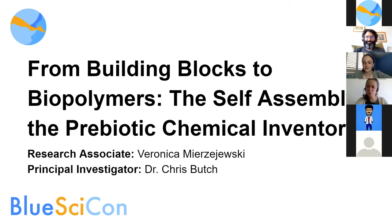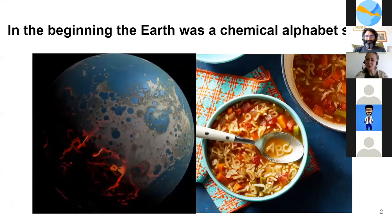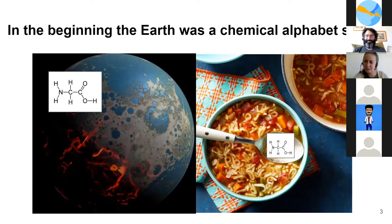A useful way to contextualize this paradigm is to think of the early earth as this chemical alphabet soup. So before life, you had these small molecules that were these letters in the soup, diffusing around randomly with no organization, and they had a lot of freedom to do so.